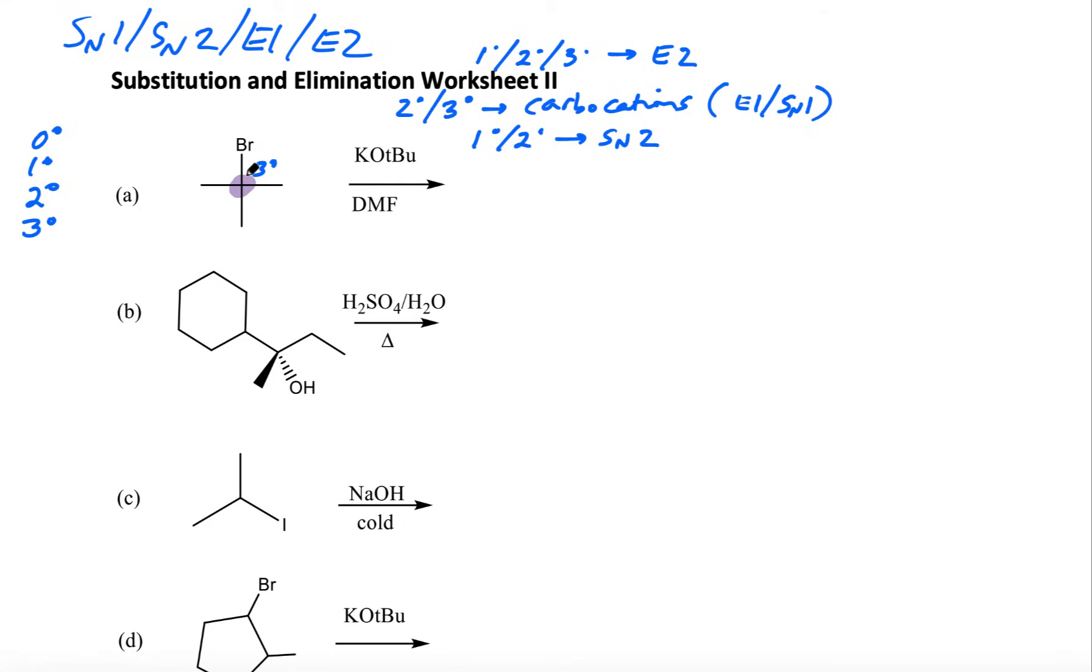I'm not going to get SN2 because this is not going to come in and attack and make that leave because there's too much steric hindrance.